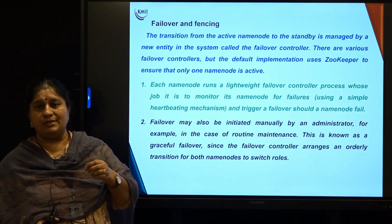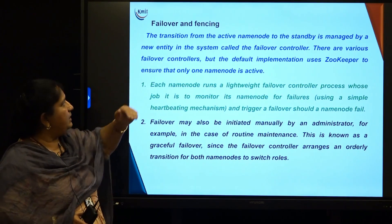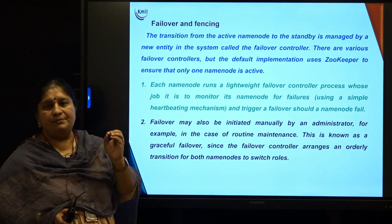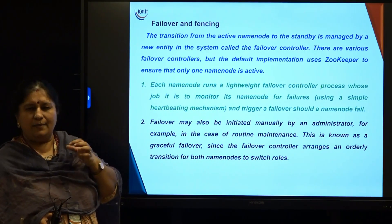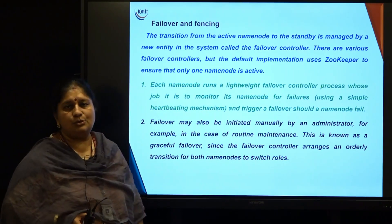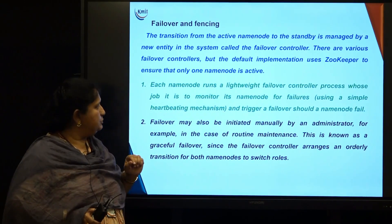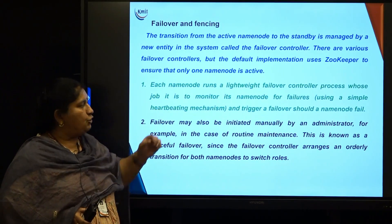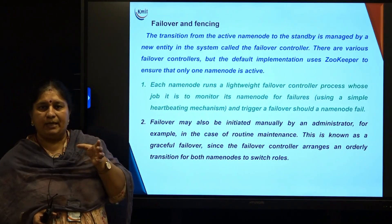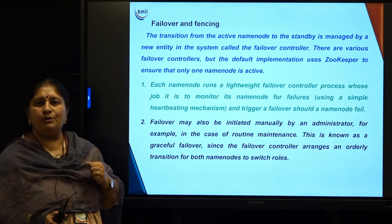Failover and fencing: the transition from active name node to standby is managed by a system entity called the failover controller. When a failure occurs, it takes control of the situation. HDFS uses something called ZooKeeper from the Hadoop ecosystem. Each name node automatically runs a lightweight failover controller process. Its job is to monitor whether the name node is working or failing by continuously sending active pulses. When the name node responds, it is understood to be working; once responses stop, the name node is understood to have failed.